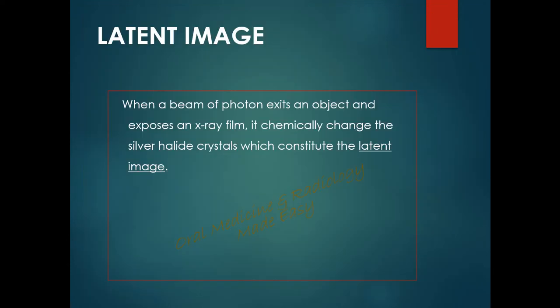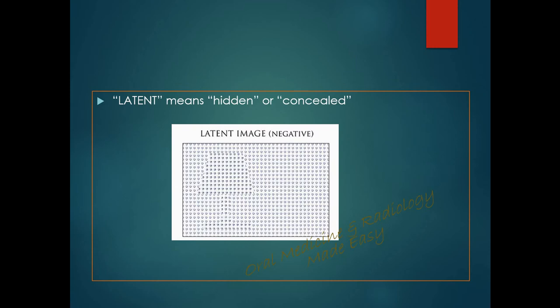What is a latent image? When a beam of photons exits an object and exposes an x-ray film, it chemically changes the silver halide crystals, which constitute the latent image. Latent means hidden or concealed. So a latent image is the image formed on the x-ray film when x-ray photons exiting an object fall onto the film, but it is not visible to the naked eye — hence it is called a latent image.